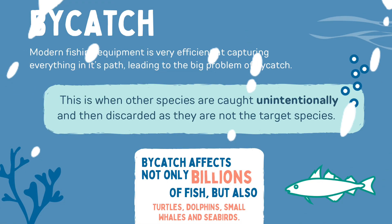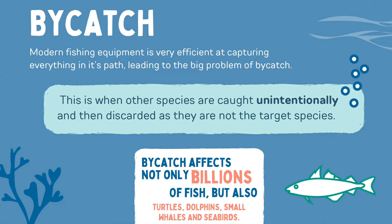Let's find out about another problem caused by the fishing industry: bycatch. Modern fishing equipment is very efficient at capturing everything in its path, leading to the big problem of bycatch. This is when other species are caught unintentionally and then discarded as they are not the target species. Bycatch affects not only billions of fish, but also turtles, dolphins, small whales and seabirds.